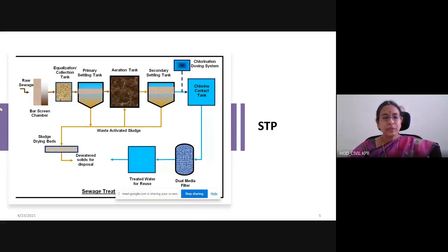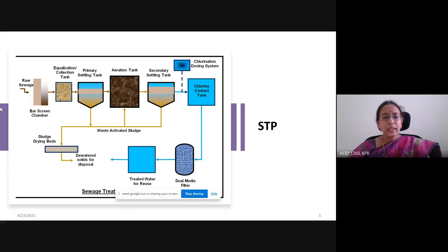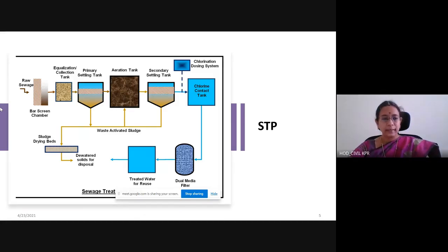All parts of the sewage — one might be from the kitchen, one from the toilet, one from a hostel, one from an academic campus — everything is put into one single tank and equalized. All the sewage are mixed together, and that tank is called a collection tank or equalization tank.